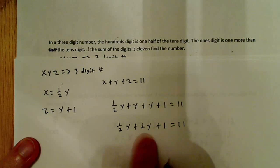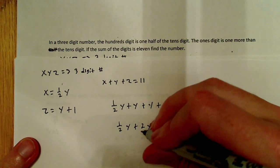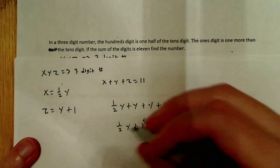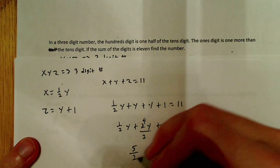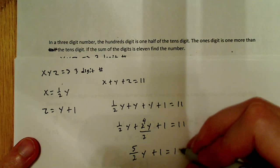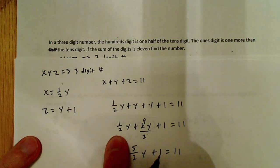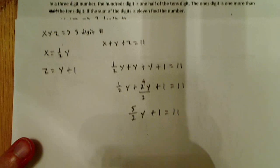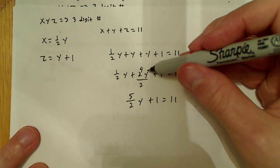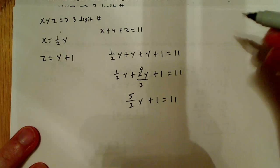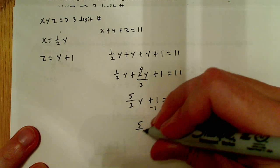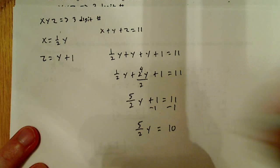This is the same as writing 4 over 2y, so combining gives 5 over 2y plus 1 is equal to 11. I got a common denominator to add those two terms together. Subtracting 1 from both sides gives 5 over 2y is equal to 10.